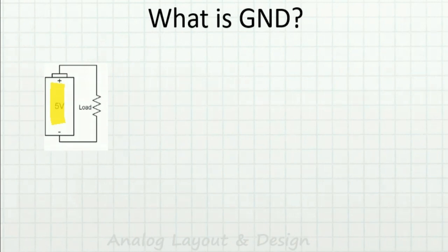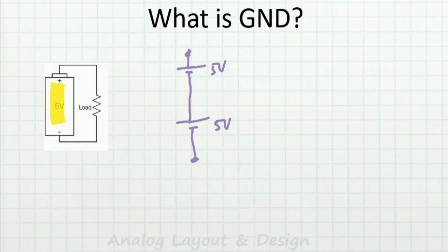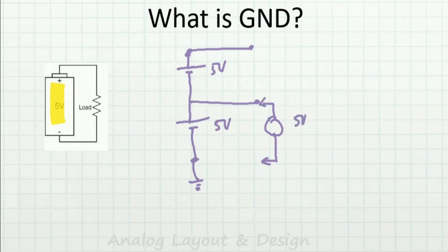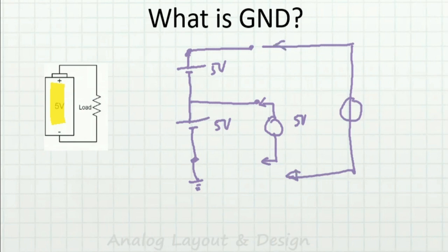Now suppose I have two cells, each one is 5 volts, connected in series. These two are the terminals. If I ground the middle point, then the voltage at one terminal is 5 volts with respect to ground and at the other terminal it is 10 volts, because both cells are in series.